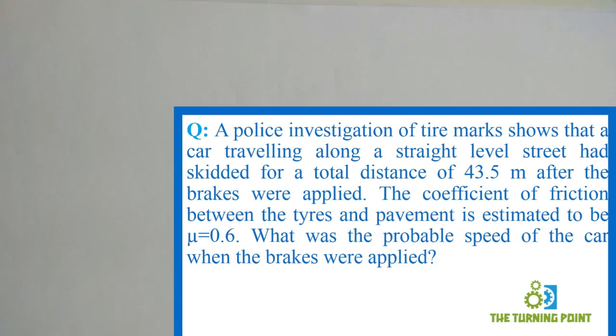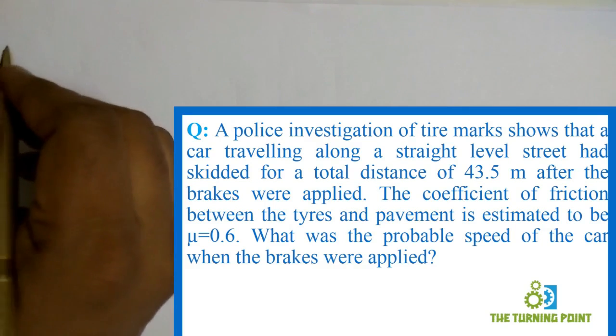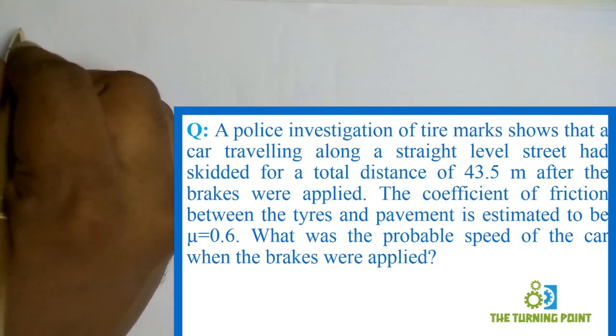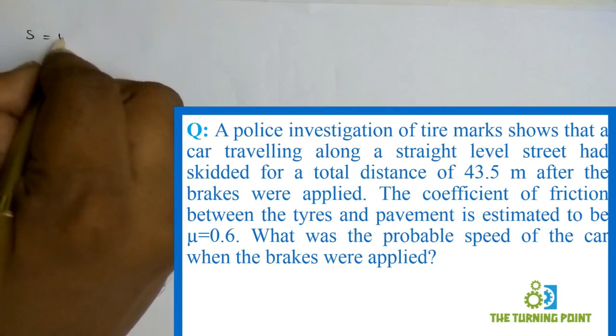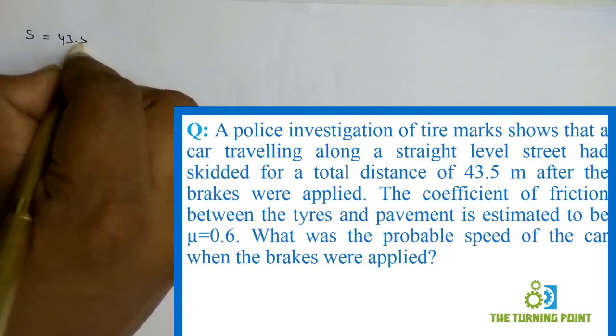A police investigation of tire marks shows that a car traveling along a straight level street had skidded a total distance of 43.5 meters. Distance is given as 43.5 meters.